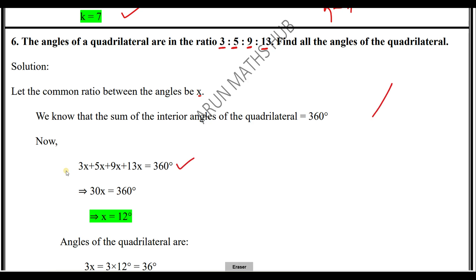Since these are like terms: 3x + 5x + 9x + 13x = 30x. So 30x = 360 degrees, giving x = 12 degrees.